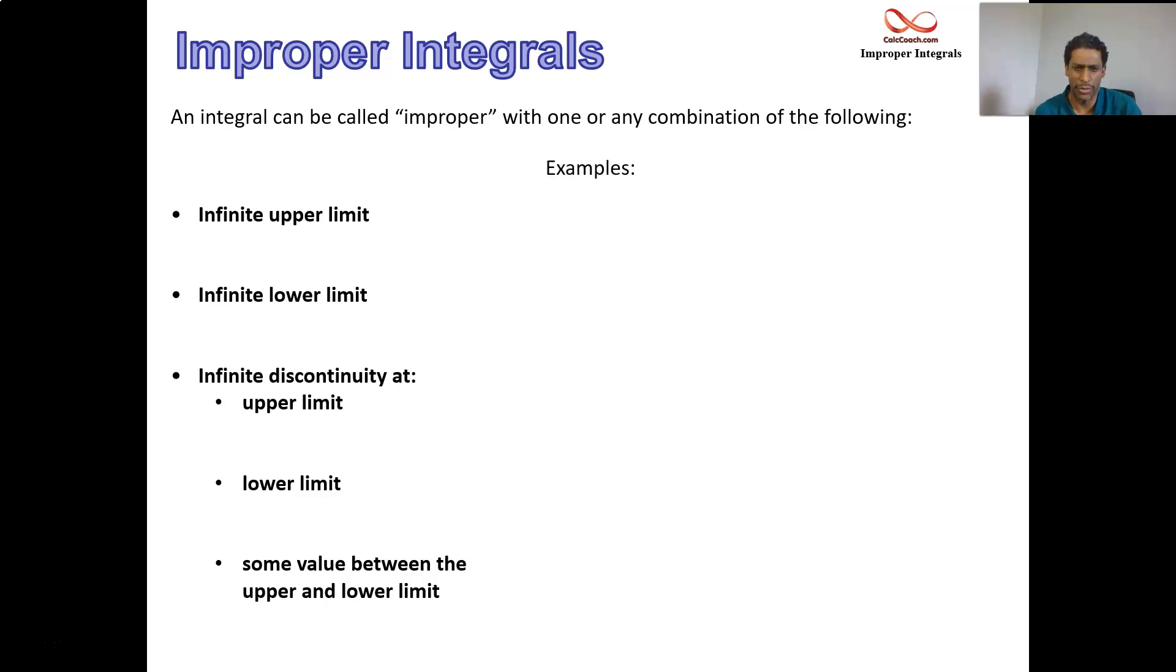Let's take a look at some examples. The integral from 1 to infinity of e to the negative 2x. The upper limit is infinity. We're going to do each of these integrals eventually, but I just want to show you an example of each different type. The integral from minus infinity to 1 of x e to the x.